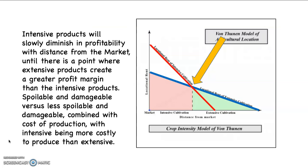And now if you look, the red line and the blue line intersect each other at some point in distance from the market. This is being pointed out by that bronze arrow. Intensive products will slowly diminish in profitability with distance from the market, just like extensive products will. Until there's a point where extensive products create a greater profit margin than the intensive products. What do you think is going to happen then? The farmer is going to choose to maximize profit and begin to grow extensive agricultural products.